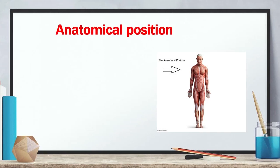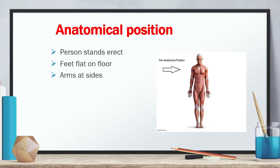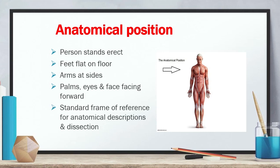Next we go to anatomical position, which is shown in the figure. The person stands erect, with feet flat on the floor, arms at sides as seen in the figure, and palms, eyes, and face facing forward. This is the standard frame of reference for anatomical descriptions and dissection, where we use terminology such as anterior, posterior, and lateral.